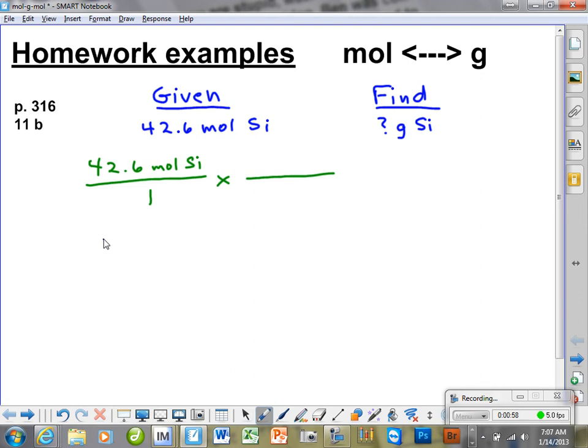So let's write that first. 28.1 grams is equal to 1 mole. Now remember our method. We start, before we do anything else, we're going to take this guy, the moles, and we're going to write it down here, moles of silicon. Now for silicon, this is for Si. That is the ratio that we need.